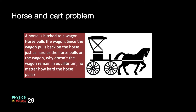Here is our famous horse and cart problem. A horse is hitched to a wagon and the horse pulls the wagon. Since the wagon pulls back on the horse just as hard as the horse pulls on the wagon, why doesn't the wagon remain in equilibrium no matter how hard the horse pulls? For example, if the wagon is at rest and the horse pulls the wagon forward, by Newton's third law the wagon pulls the horse backward — why still does the entire system accelerate forward?